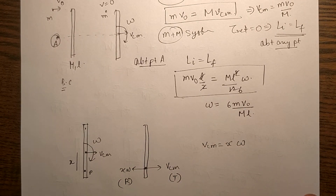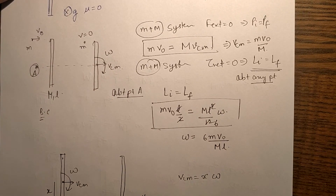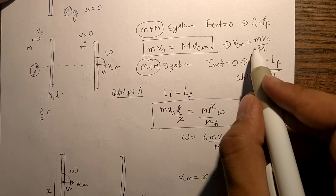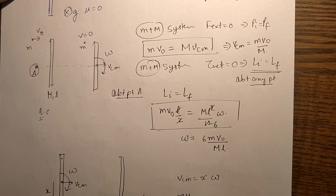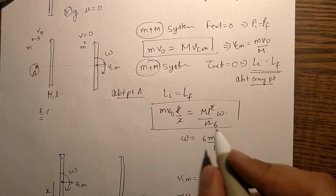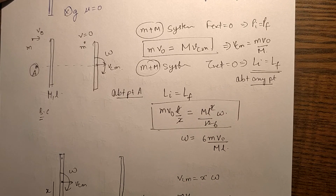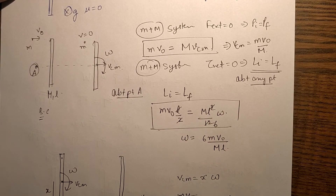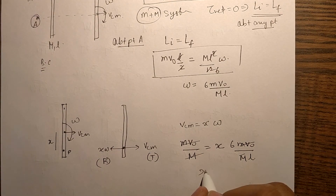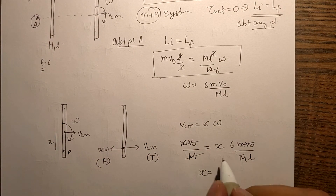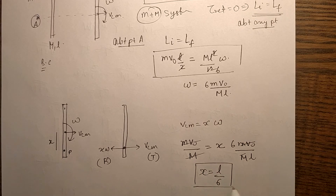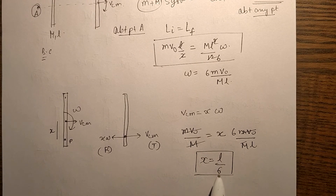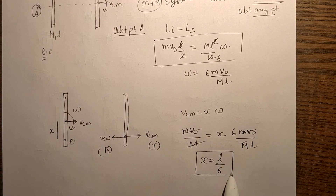Substituting the values: Vcm = mV₀/M and ω = 6mV₀/(ML). Setting Vcm = x × ω, the common terms cancel, giving x = L/6. So at a distance L/6 from the center, point P remains stationary just after the collision.